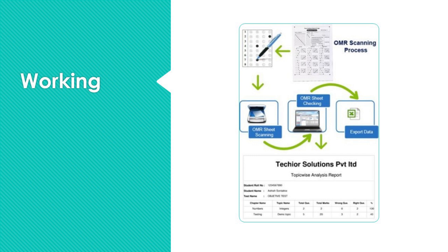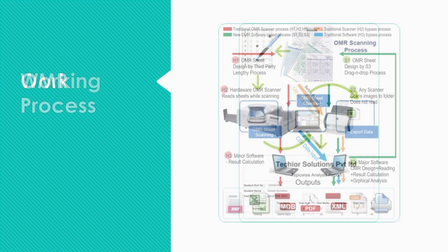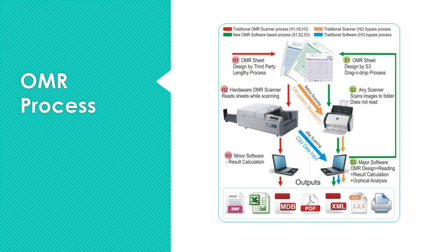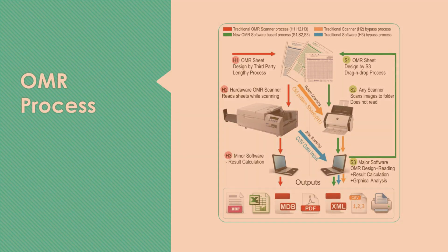OMR is gathering information from human beings by recognizing marks on a document. OMR is accomplished using a hardware device scanner that detects a reflection or limited light transmittance on or through a piece of paper.